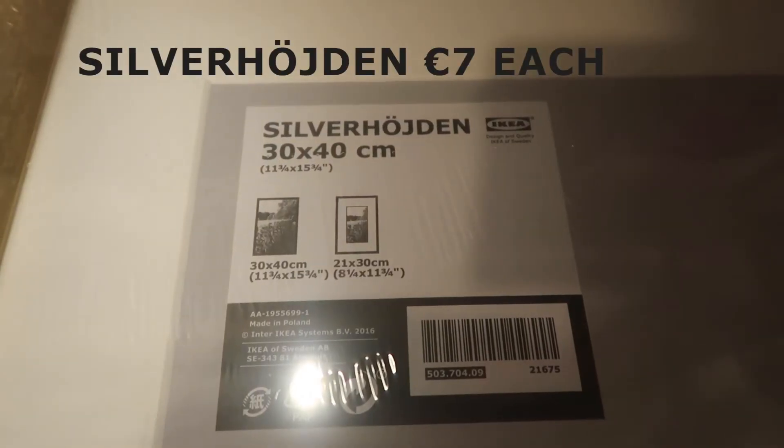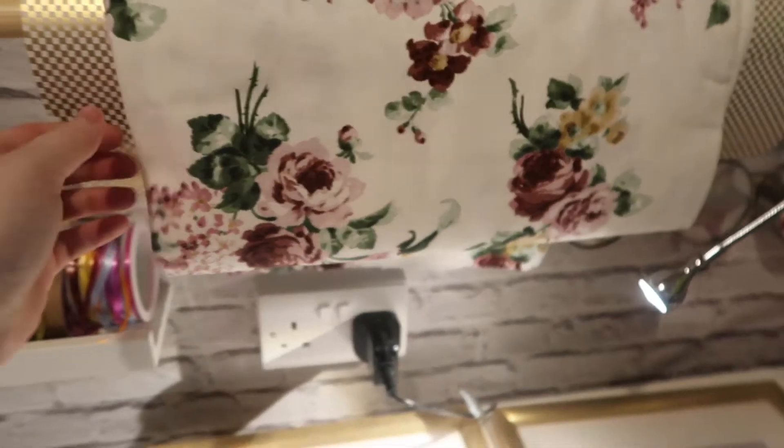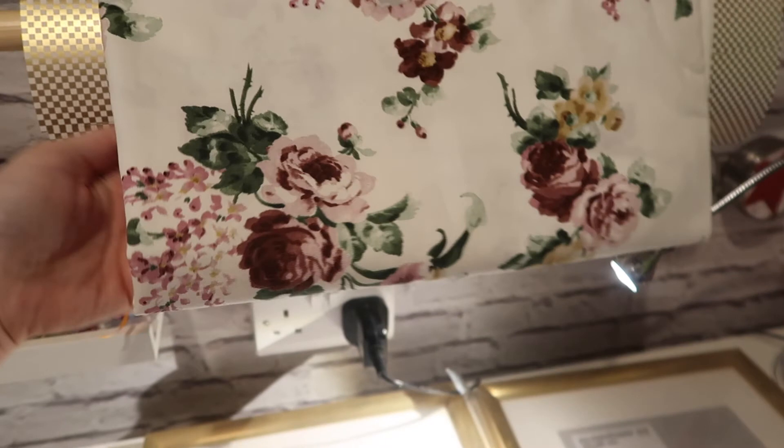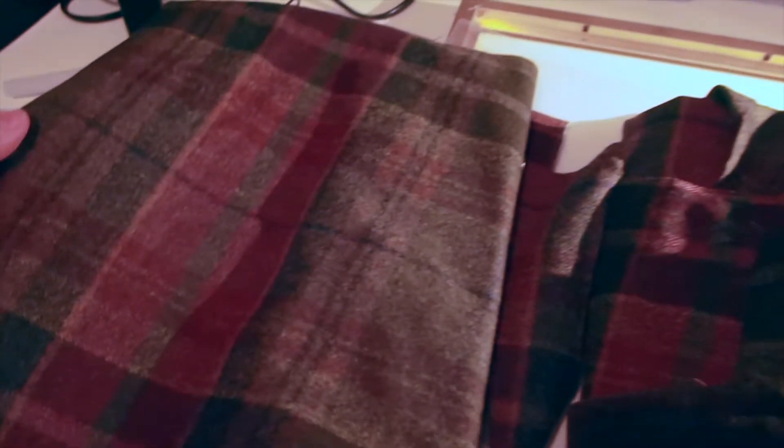Today I am using some IKEA frames, the Silver Hodgen, and there is the number if anyone wants to screenshot it. I am using some fabric from IKEA which was super cheap, it was five euros for two meters. Then I am using some tartan material that I found at home but IKEA has such a range of materials you could even pick ones with letters on it or numbers on it and put it up in a baby's room or above your bed or wherever you want.